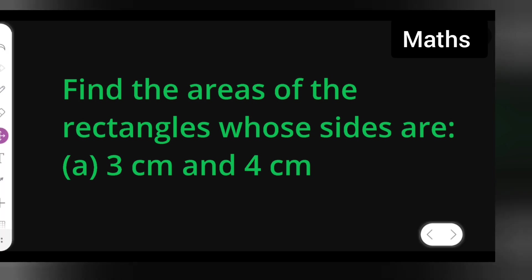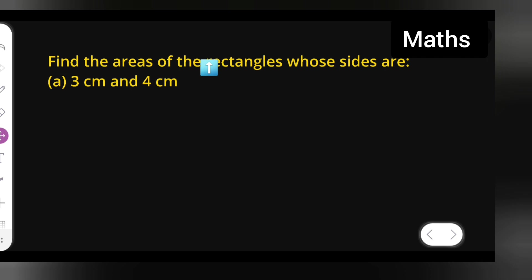So, in today's question we need to find the area of the rectangle whose side is 3 cm and 4 cm. First, we can take down the question. Find the areas of the rectangle whose sides are 3 cm and 4 cm.